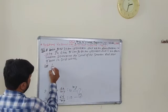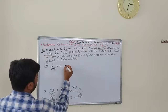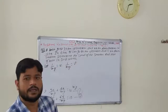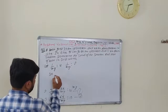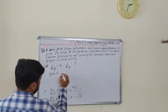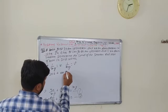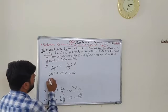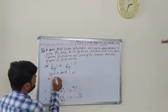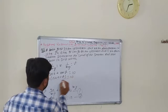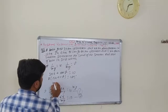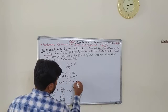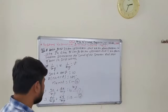Let 1/(x minus y) = u and 1/(x plus y) = v. Substituting into the first equation: 30u + 44v = 10. Dividing by 2: 15u + 22v = 5. This is our third equation.